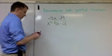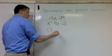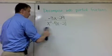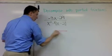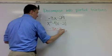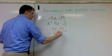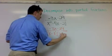So this factors to, let me put the full fraction here, negative 3x minus 29 over x minus 7 times x plus 3.